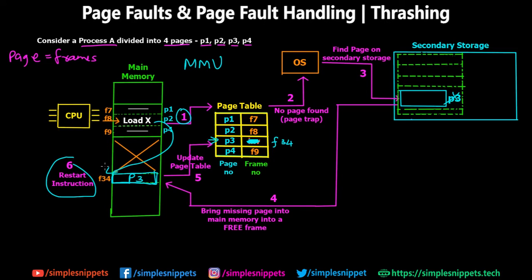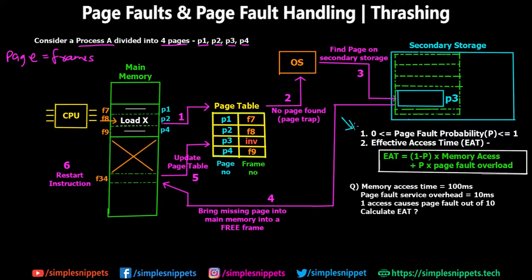Now let's try a small numerical which usually comes in exams associated with page fault. Point one: the page fault probability P satisfies 0 ≤ P ≤ 1. When a paging scheme is implemented, page faults are going to happen when main memory gets full — pages are being swapped between main memory and secondary storage. If a certain page is not in main memory, a page fault will occur, so page fault probability is between zero and one.